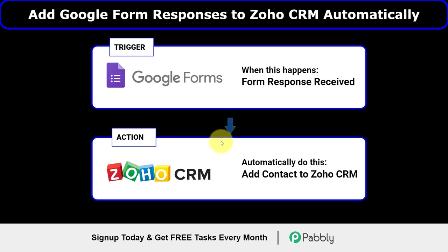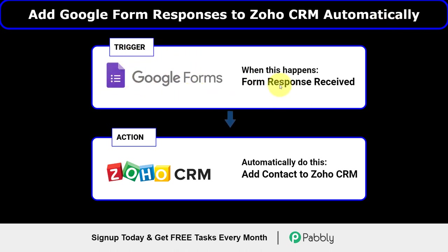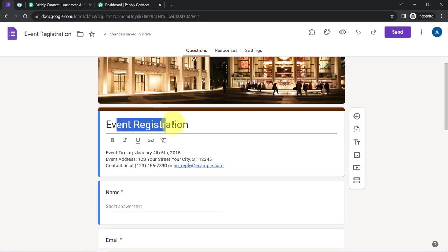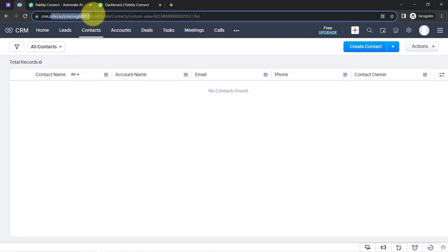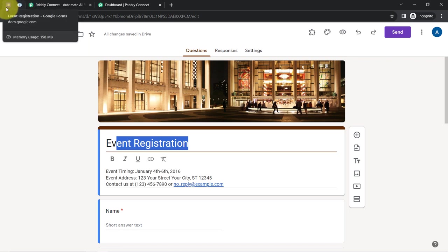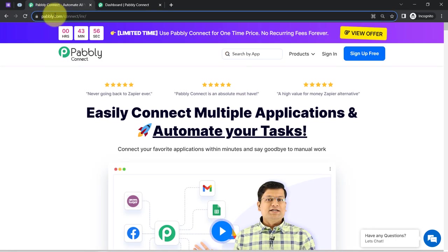Now let me show you how to reach Pabbly Connect and build a connection between different applications, everything from scratch. I am taking the example of how to add Google Forms responses to Zoho CRM automatically. I will submit a Google Form and you will see how the same person gets added as a contact in Zoho CRM. I will need to build the integration using Pabbly Connect first.